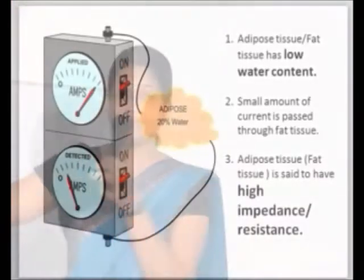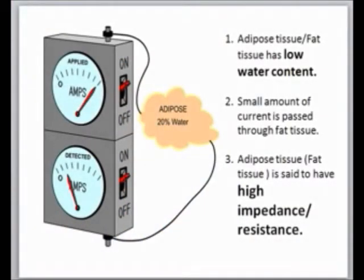In our body there are basically two types of body tissues: tissues with high water content, and tissues with very low water content. Taking the first example — tissues with low water content and high fat levels, that is the adipose tissue or fat tissue. When current is applied to fat tissue, only a very small fraction passes through, meaning the detector receives only a small fraction.